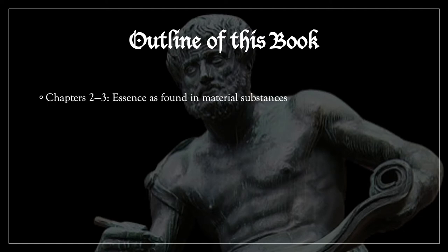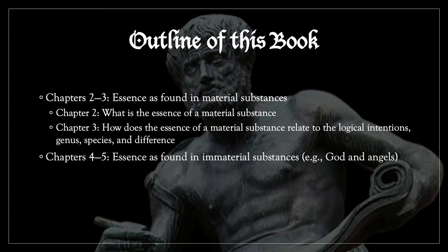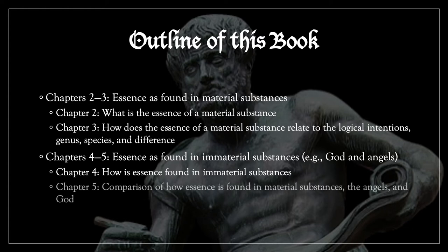Chapters 2–3 discuss essence as found in material substances. Chapter 2 in particular looks at what is the essence of a material substance. Chapter 3, on the other hand, looks at how the essence of a material substance relates to the logical intentions — genus, species, and difference. Chapters 4–5 look at essence as found in immaterial substances, such as God and the angels. Chapter 4 in particular looks at how essence is found in these immaterial substances. And chapter 5 compares how essence is found in material substances, angels, and God.